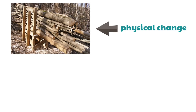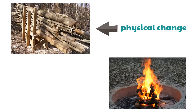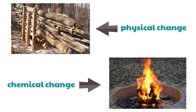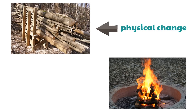Now let's say you take some of those logs and you make a fire from them and the logs are burned. The burning — is that a physical or a chemical change? Yeah, it's a chemical change, because it's changing the type of matter. The wood turns black and it can turn into ashes. It changes the wood itself. It's a chemical change.